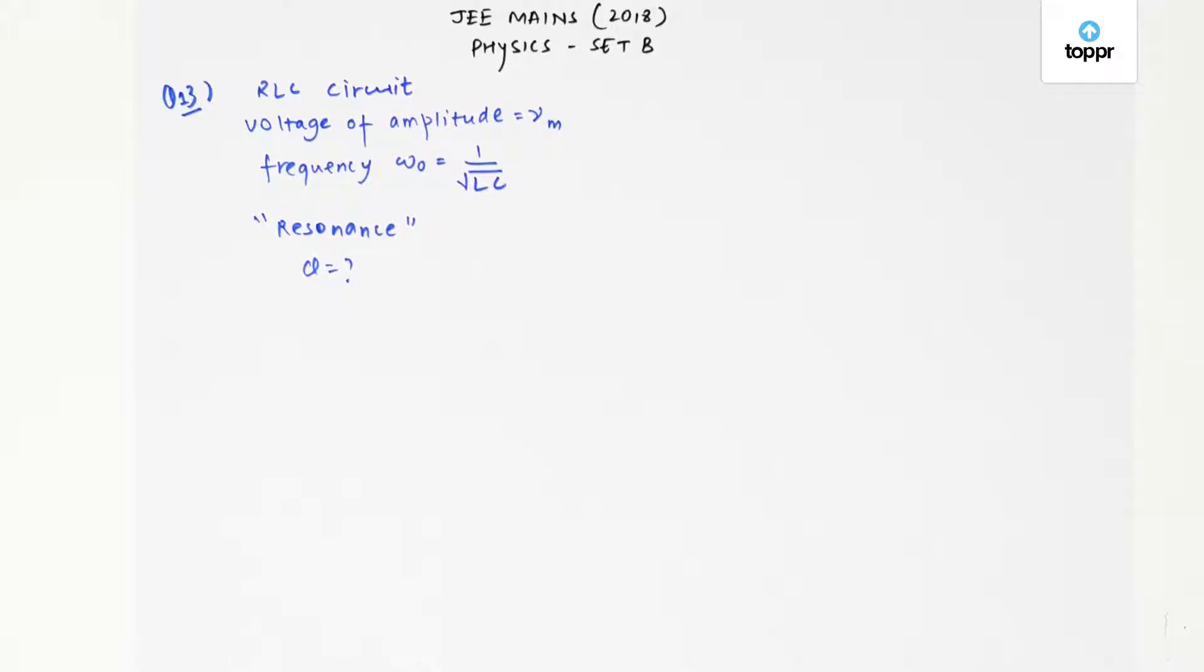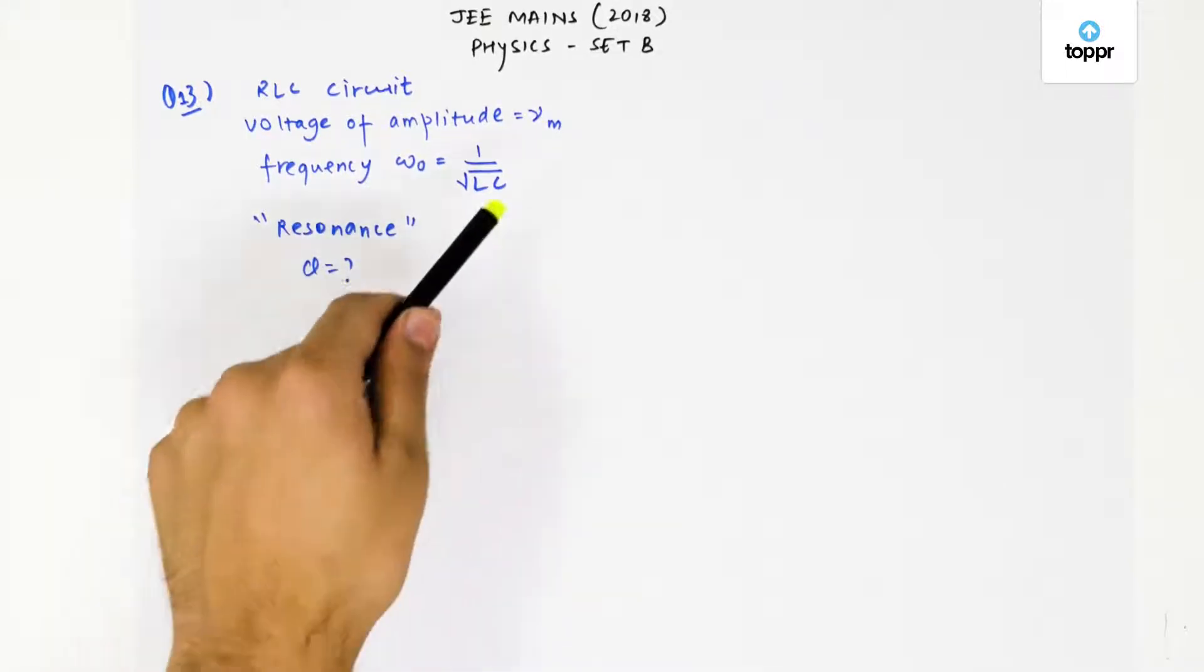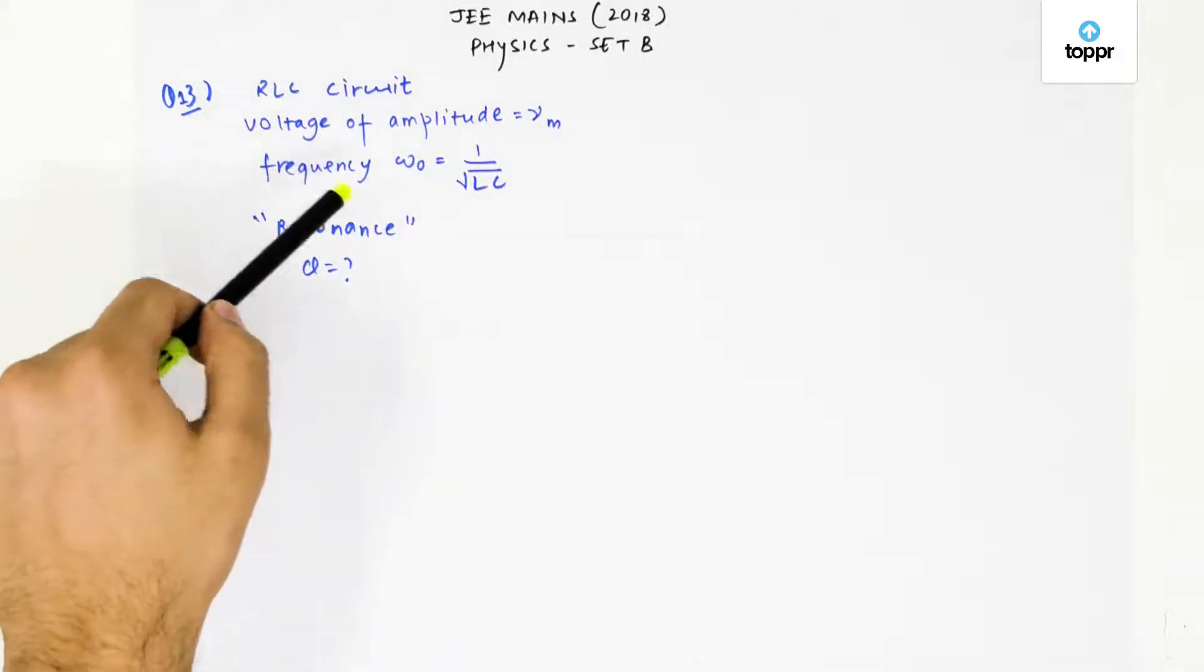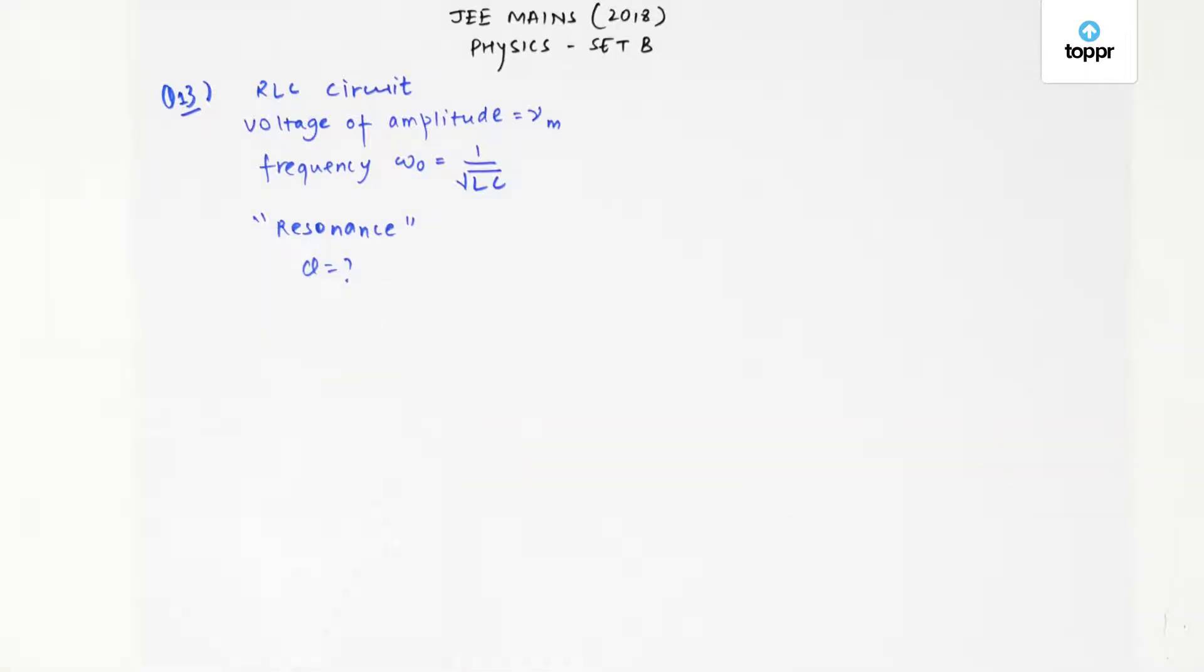For an RLC circuit driven with voltage of amplitude Vm and frequency ω₀ = 1/√(LC), the circuit exhibits resonance. We have to find out the quality factor Q.